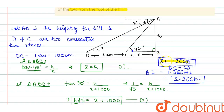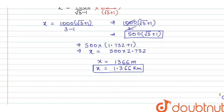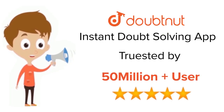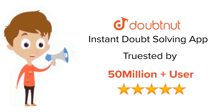So the answers are: x (BC) equals 1.366 kilometers and BD equals 2.366 kilometers. This is the answer to the given question. Thank you. For class 6 to 12th, IIT-JEE and NEET level, trusted by more than 5 crore students — download the DoubtNut app.